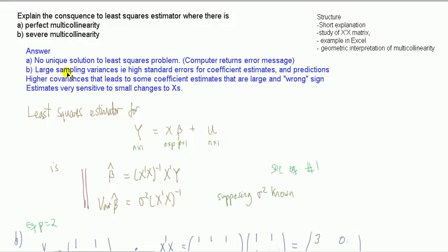I can break this down into three things that are going to happen. First, you're going to have large sampling variances — high standard errors for the coefficient estimates and for the predictions. Second, you're going to have higher covariance between the coefficient estimates, which leads to more erratic estimates in any one sample. Because high covariances imply higher correlations, if one estimate is very big, that could lead to another estimate being very big or very negative, hence estimates with the wrong sign.